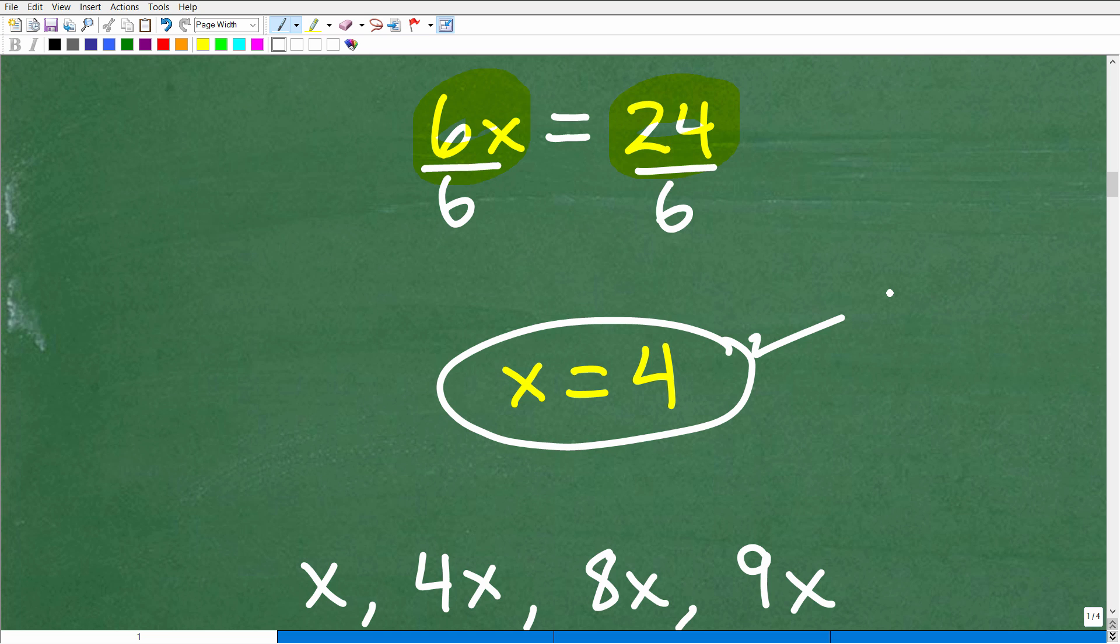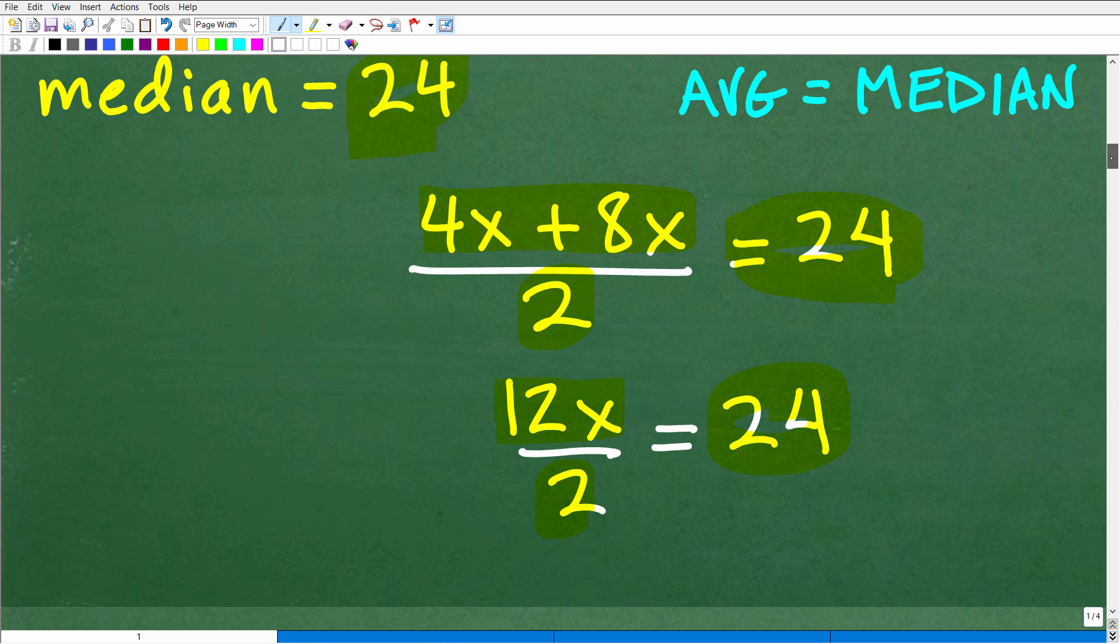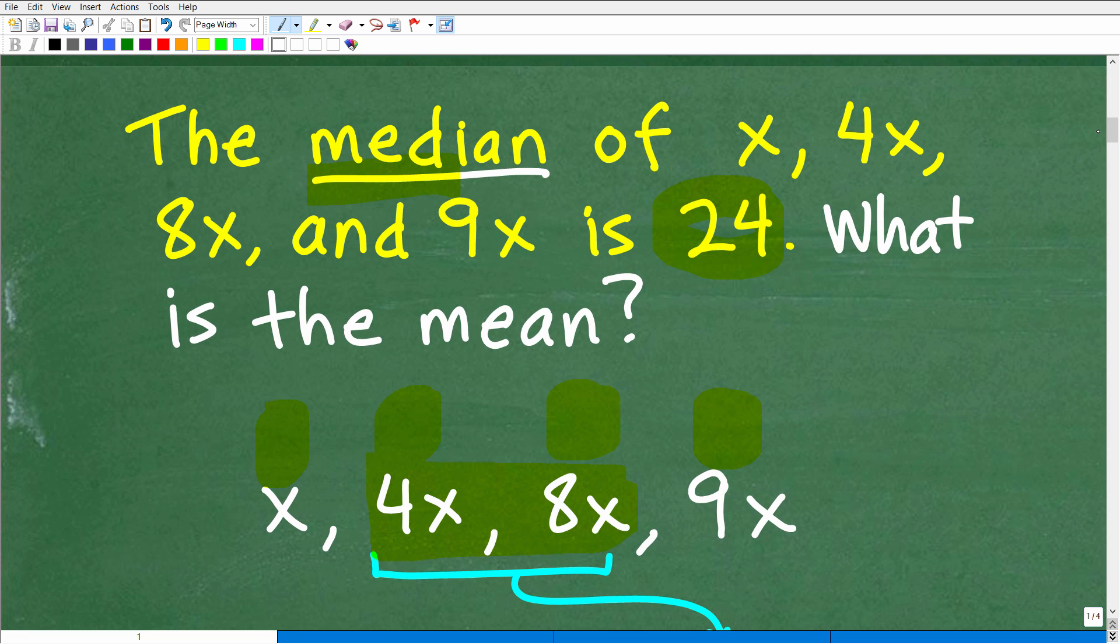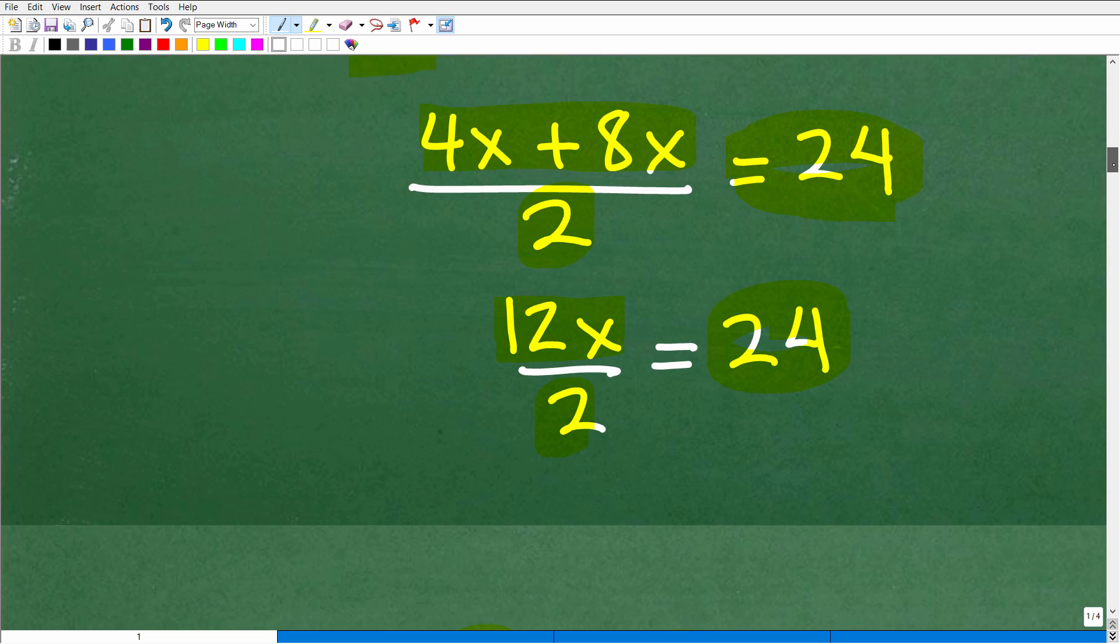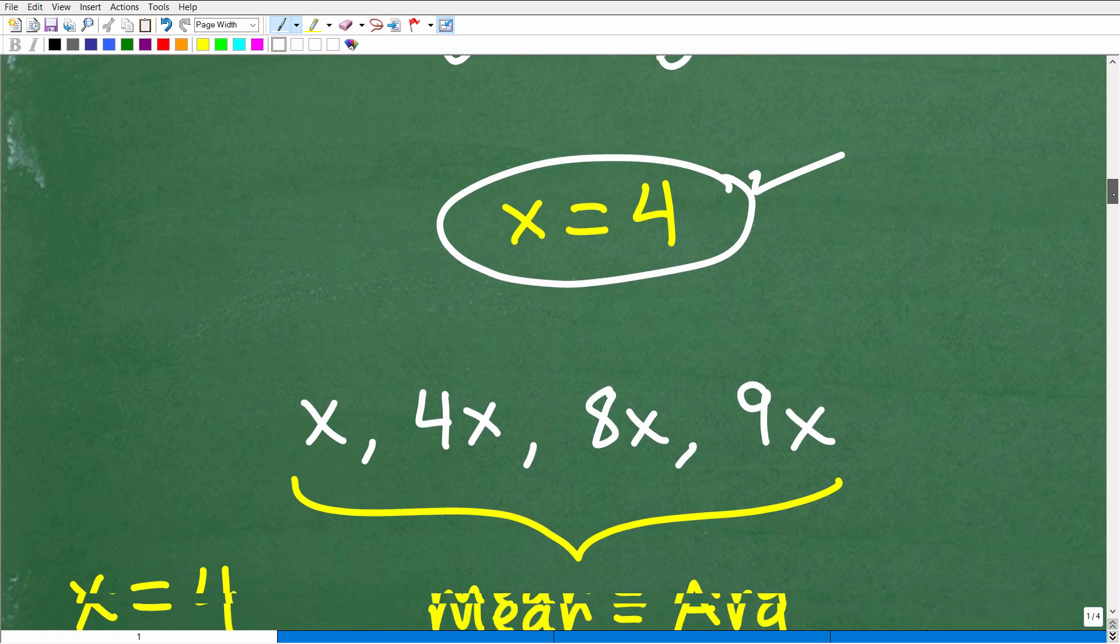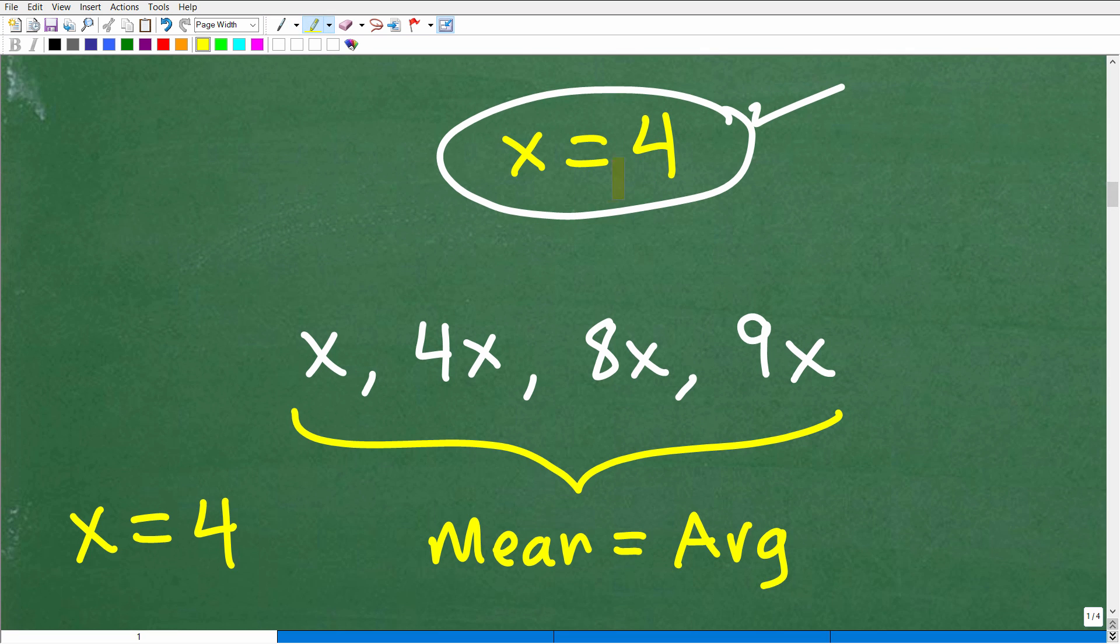Okay, so that's like the first part of this problem, but we have a whole other phase of this problem. So we know what x is equal to, but we don't just celebrate yet because we're not done. Now we need to figure out the mean, which is the average of all four of these numbers here. So we're going to actually have to figure out what the actual value of these numbers are. And we could do that because we know what x is equal to. So if x is equal to 4, this x right here would be 4. And this one would be 4 times 4 is 16. 8 times 4 is 32. 9 times 4 is 36. So x is equal to 4. And we can calculate the average of the mean, but we first have to get these values. So let's do that right now.